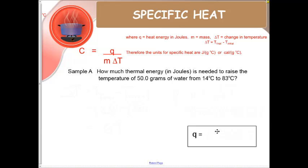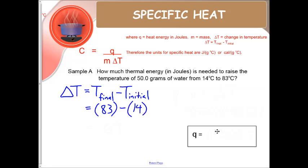So the first thing we want to do is figure out what delta T is. So delta T is T final minus T initial. We plug in those numbers we get 83 minus 14. So our change in T is going to be 69 degrees.